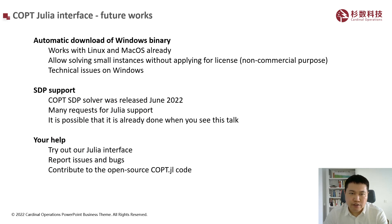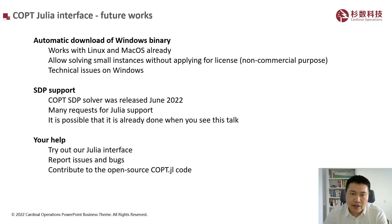The Copt Julia interface is fairly new, and there are future works to do. For example, we want to enable automatic download of Windows binaries, which already works with Linux and macOS. This would allow solving small instances without even applying for a Copt license for non-commercial purposes. We also want to add SDP support. Despite releasing the Copt SDP solver only last month, there have been many requests for its Julia support — it is possible it's already done when you see this talk. Going forward, you can help by trying out our interface, reporting issues and bugs, and contributing to the open-source Copt Julia interface code.